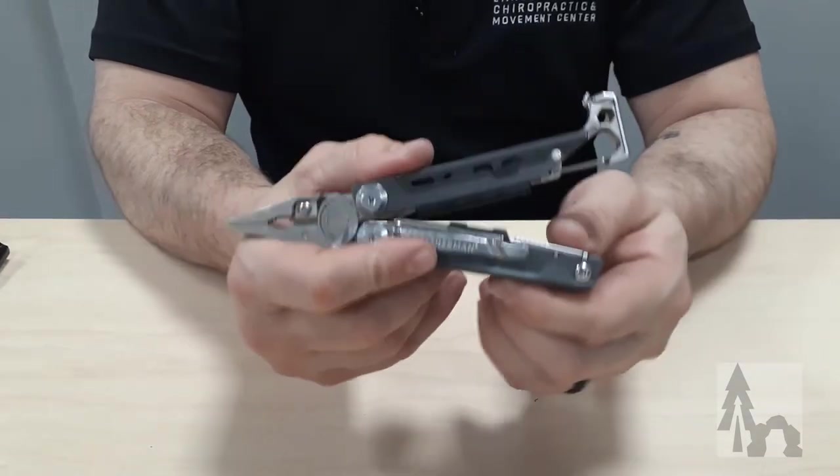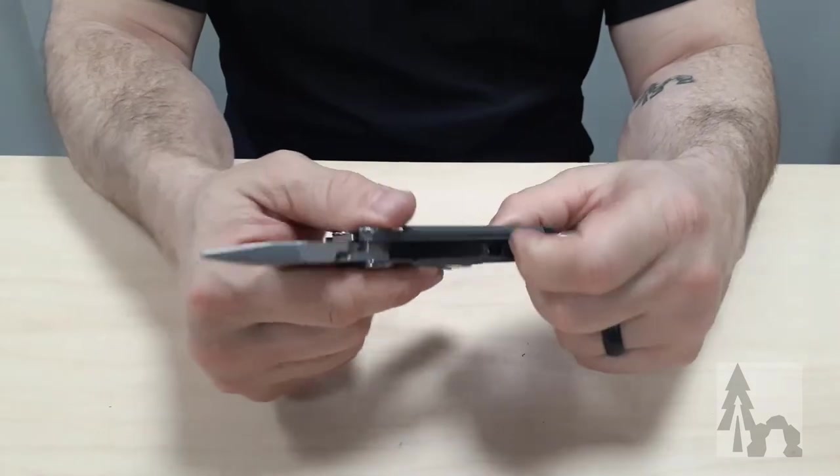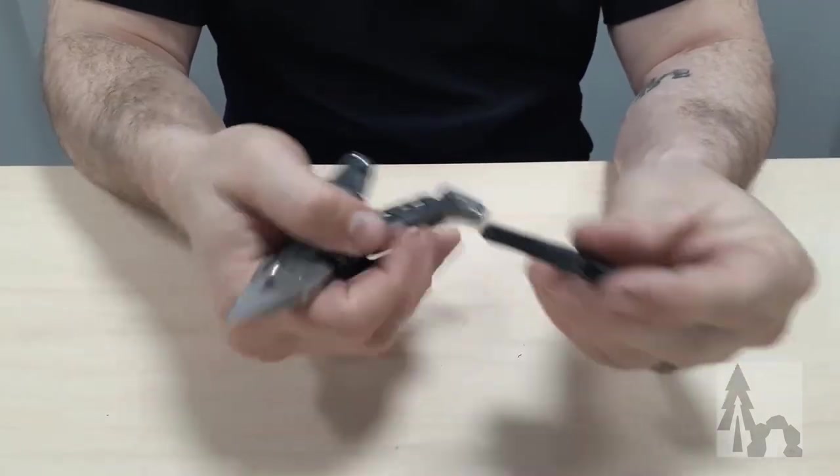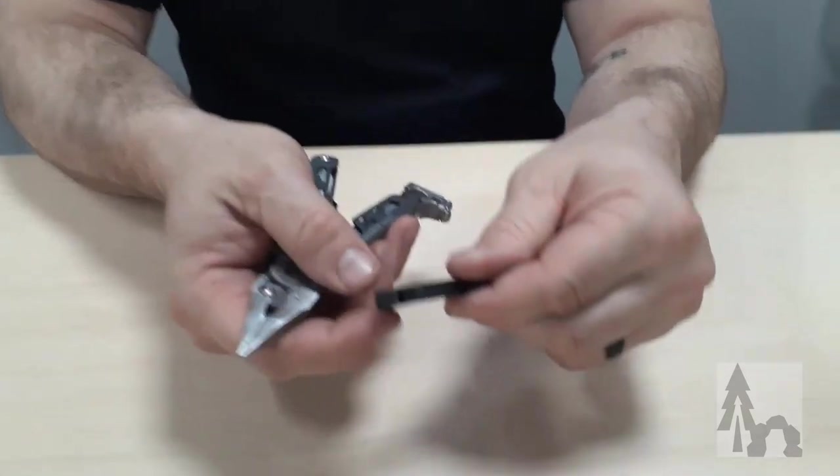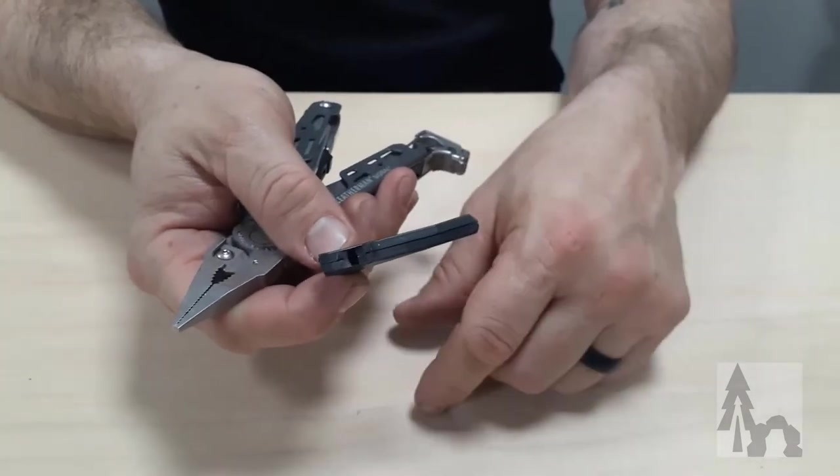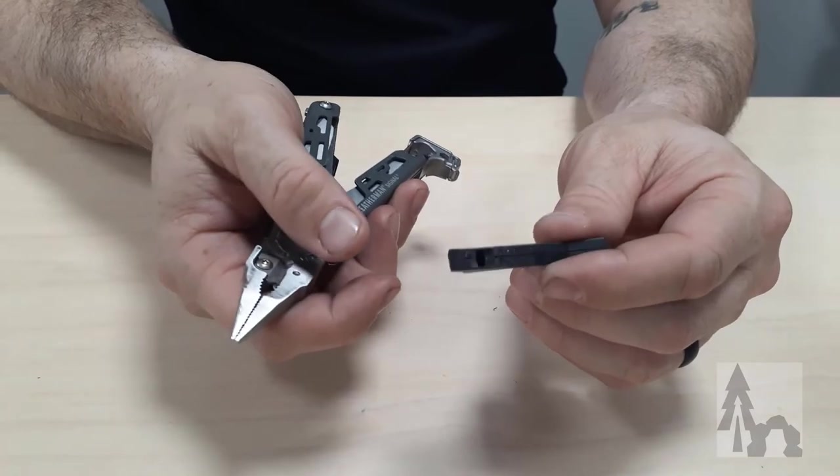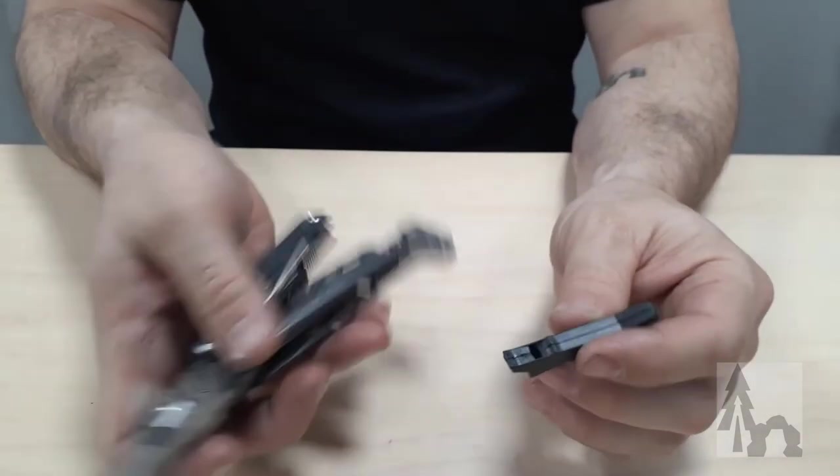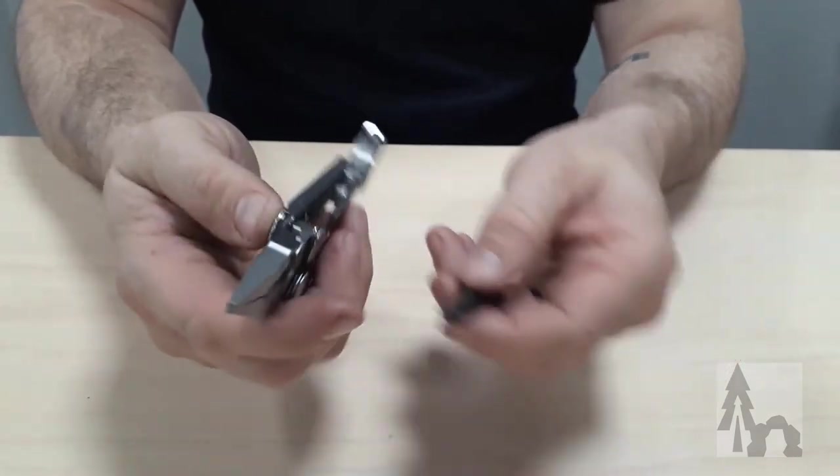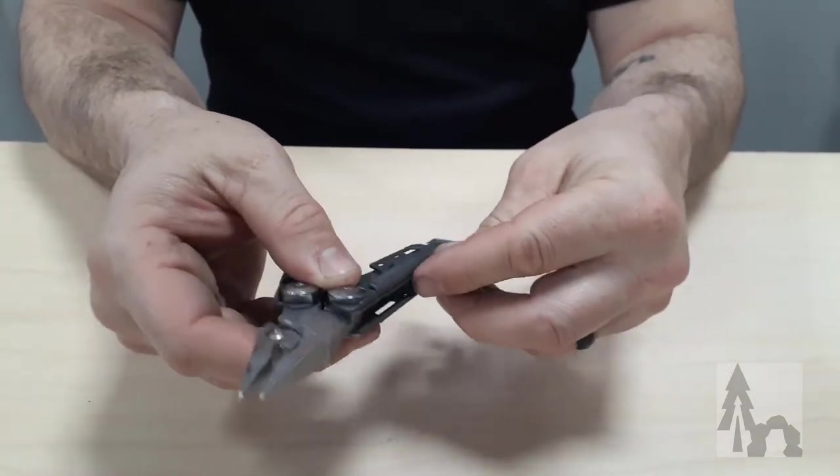On the other side, by pulling this little tab back, I can pull out that little ferrocerium rod, and it comes with a little whistle built in. It's not that loud, but it's nice to have a second or redundant whistle with you all the time. It could help in a pinch. So that slides right down in there.